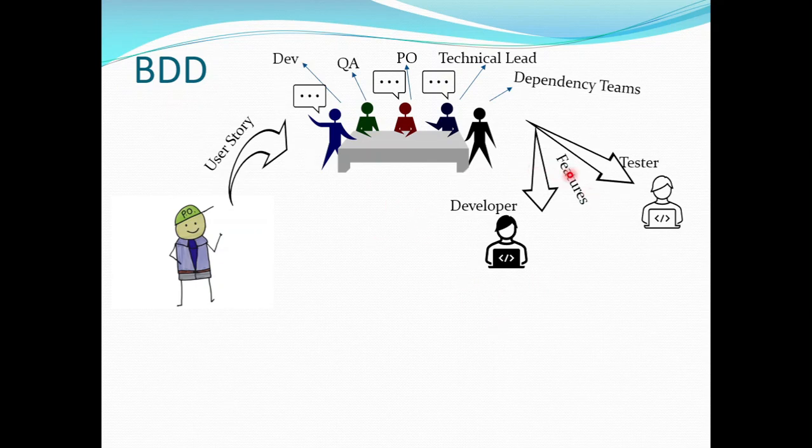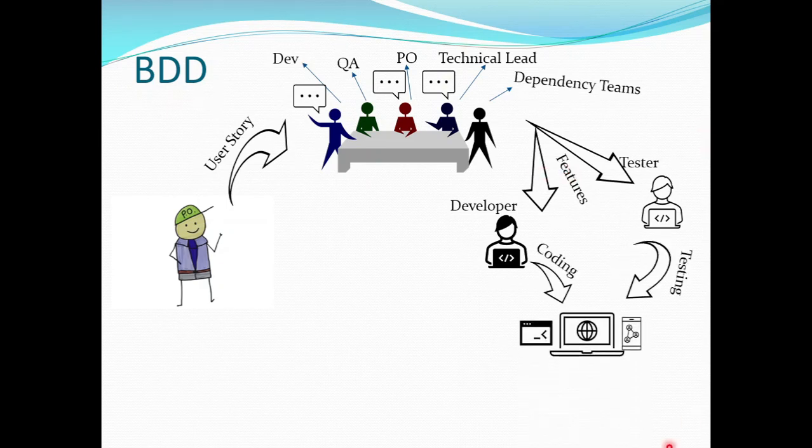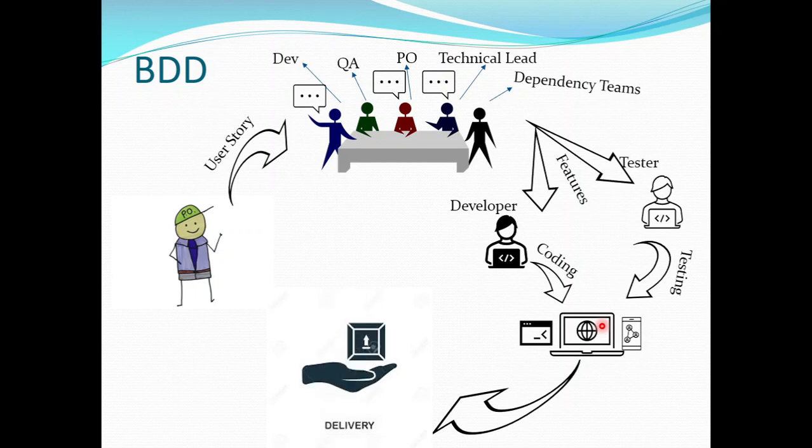Once the development team is done with their code, they'll be deploying the code and the testing team will test this application which was deployed. Once we get the sign-off from testing, we'll be delivering the application to the end user. This is how the process repeats.